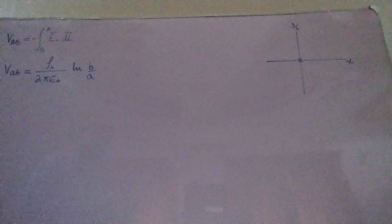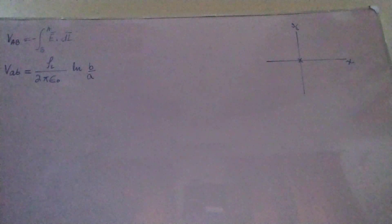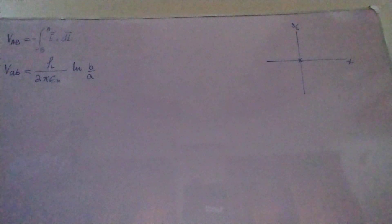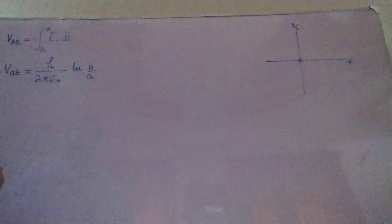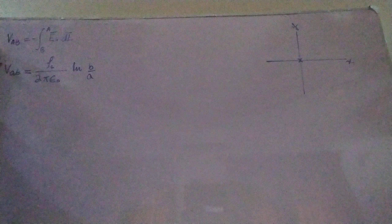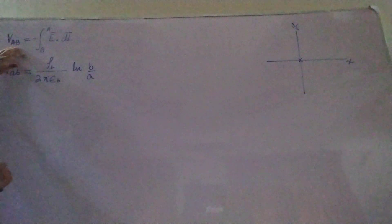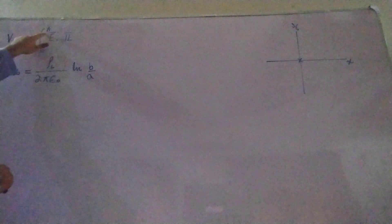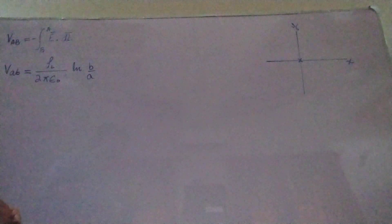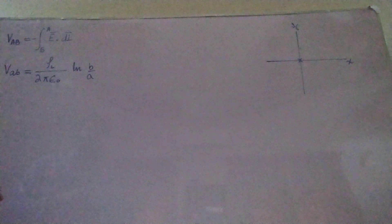In this session we are going to discuss everything about the potential difference between two points A and B, where the charge distribution is an infinite uniform line charge density having constant charge density given by rho L. The general formula for finding the electric potential difference between two points B and A, where B is the initial point and A is the final point, involves the electric field intensity E of the source charge distribution.